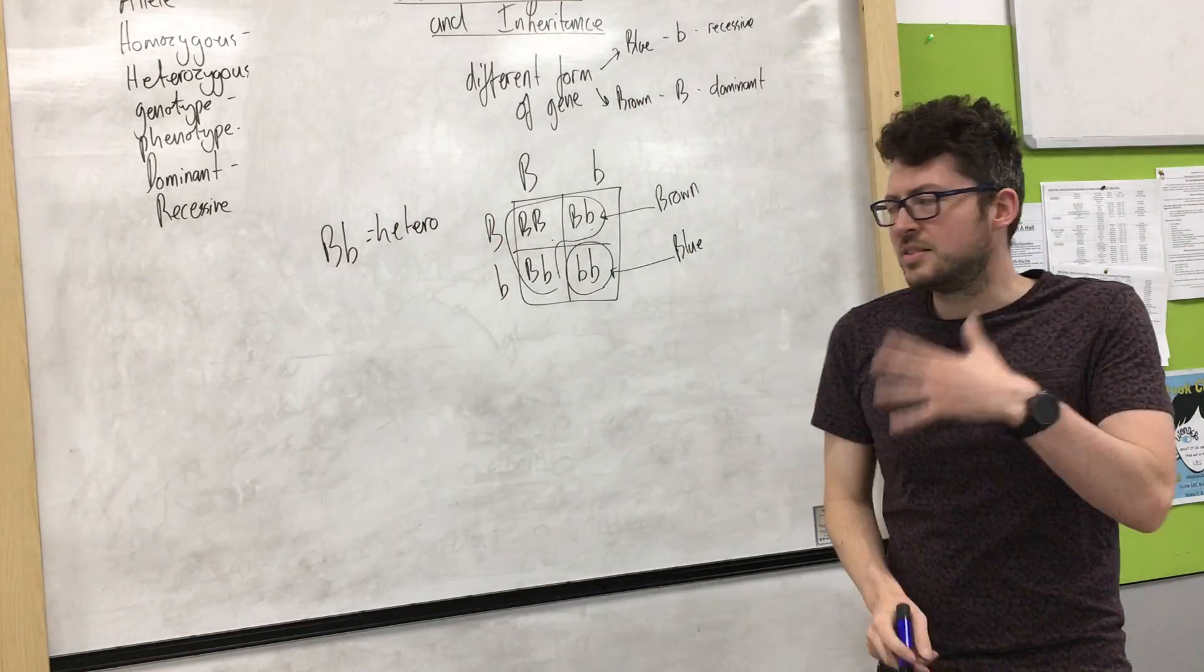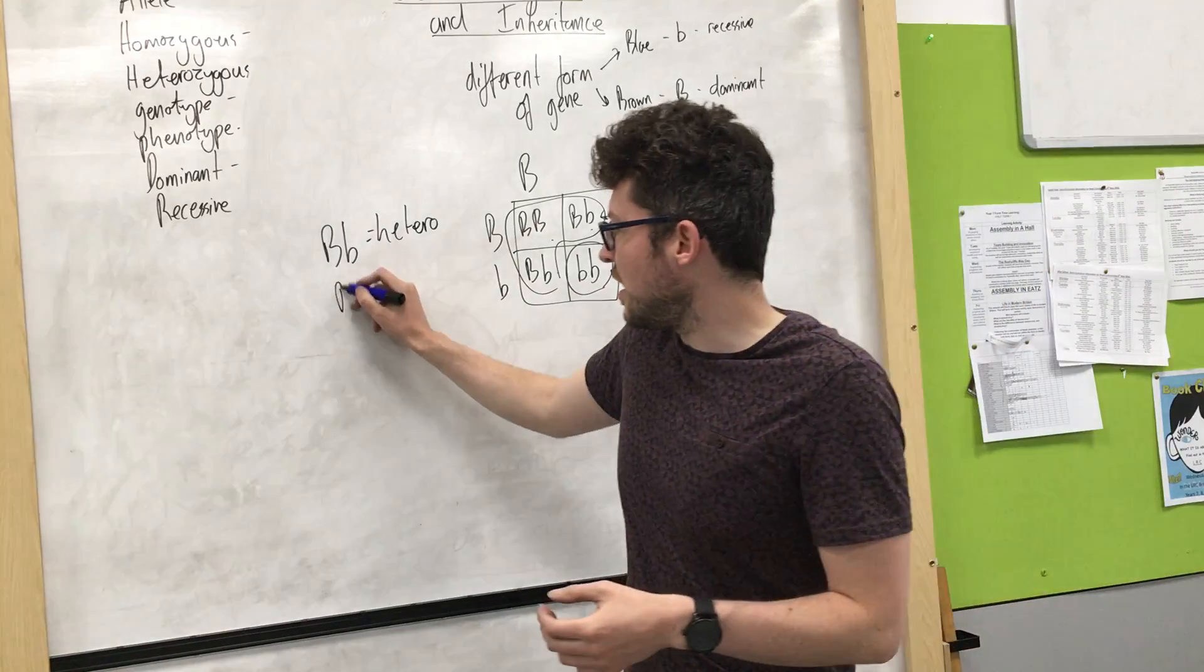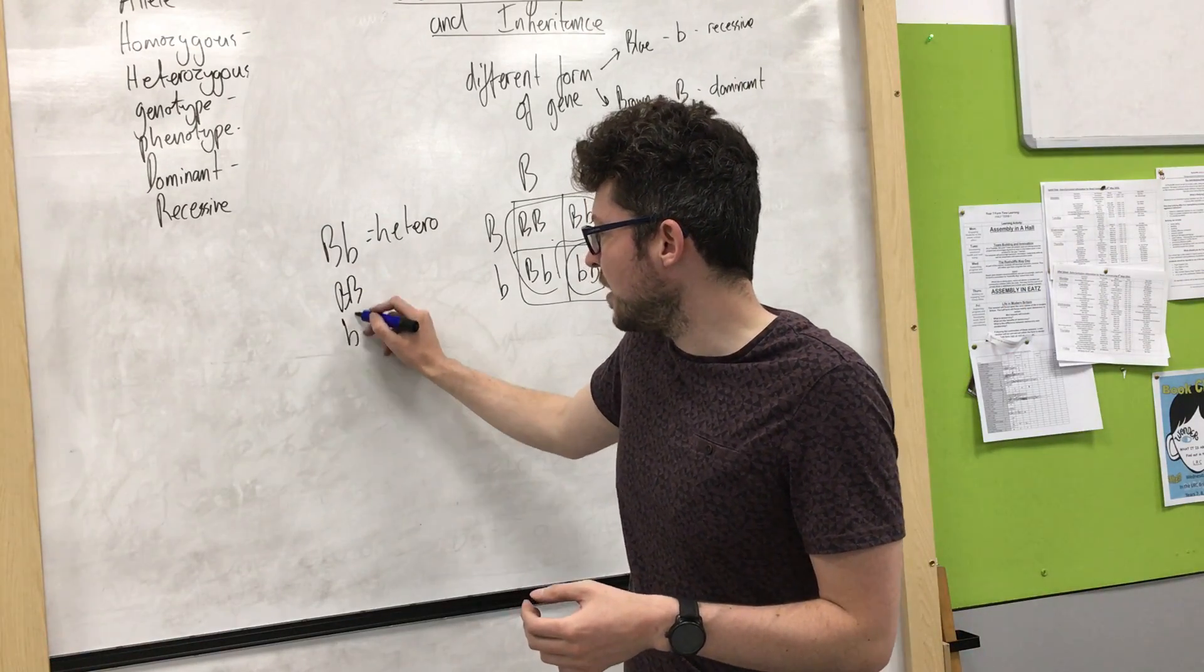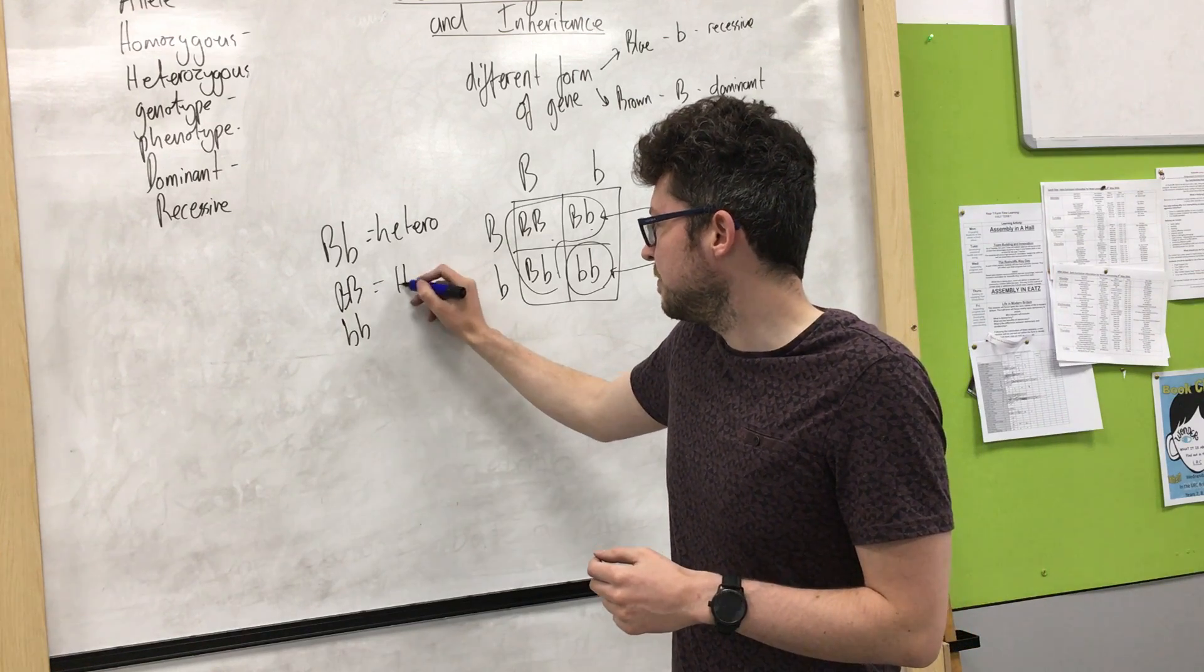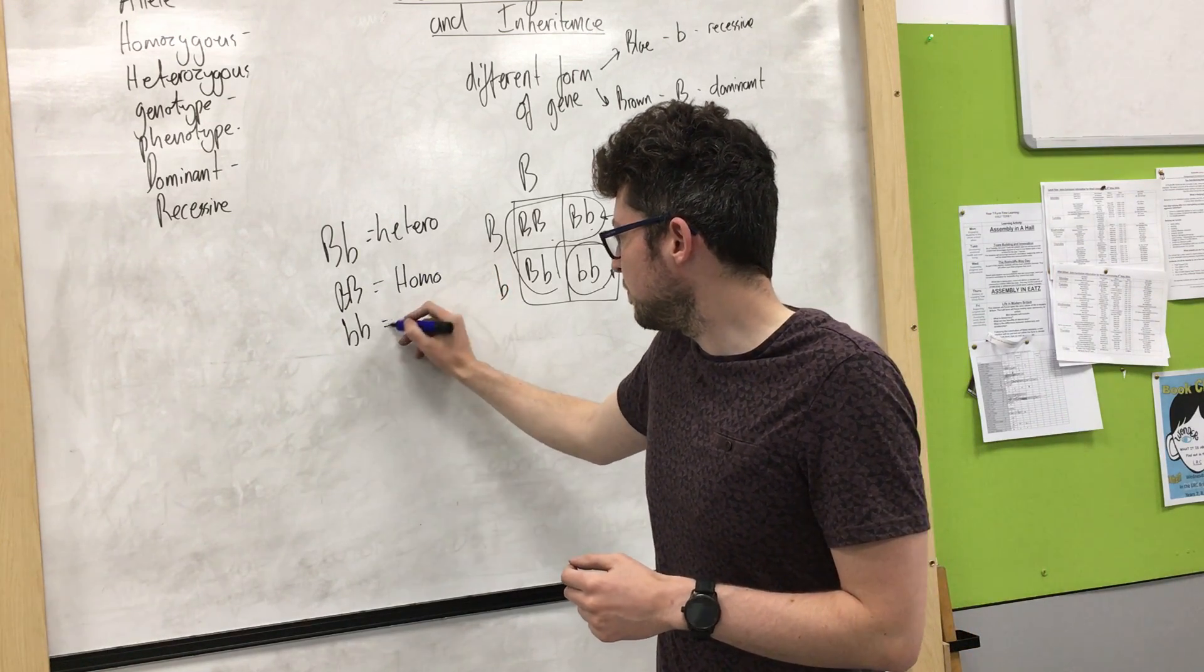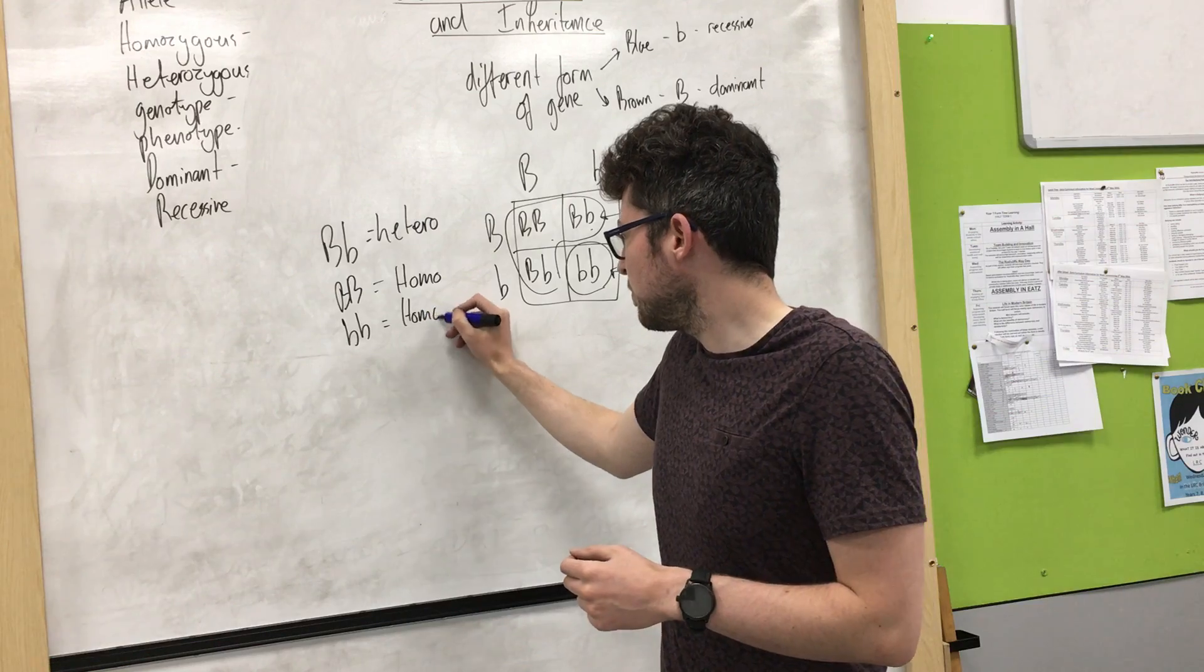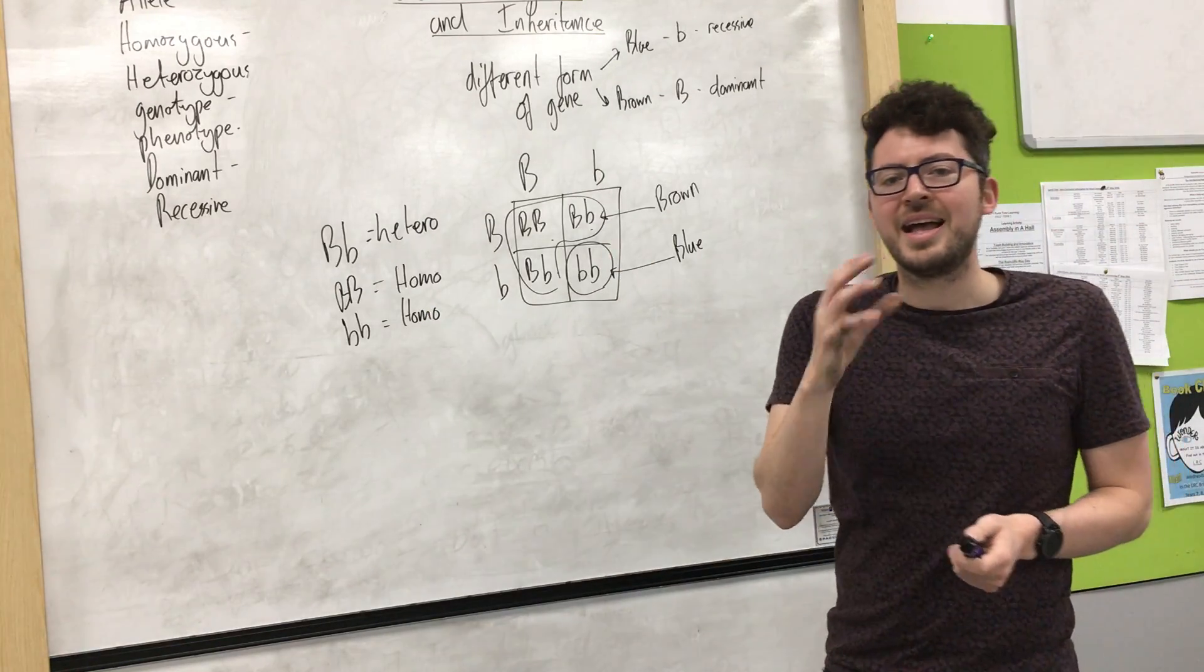So hetero means different but big B big B and small b small b would both be homozygous. Because they have the same allele.